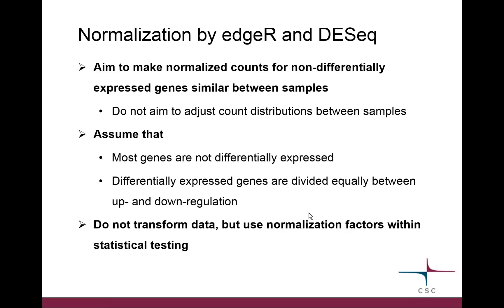Some may have done microarray analysis before, where normalization forces the distributions to be identical. Here we don't do that — we just want to make sure that non-differentially expressed genes have more or less similar count levels. This assumes that most genes don't change, and that those that do change go roughly equally up and down. These tools also don't output the normalized data directly; they just calculate normalization factors internally when doing the testing.